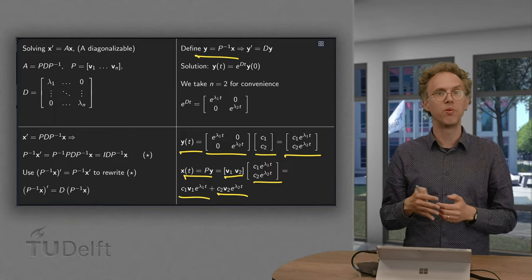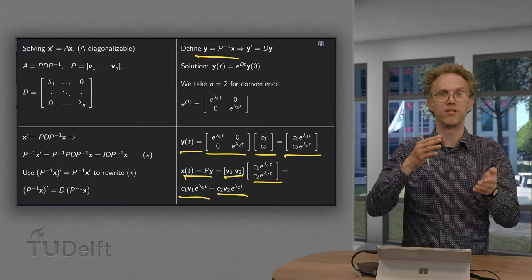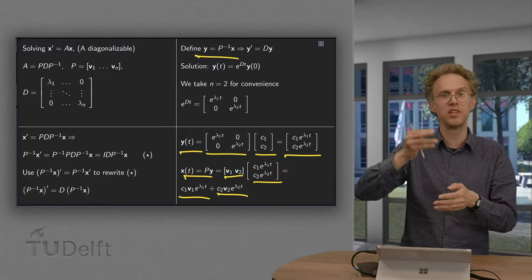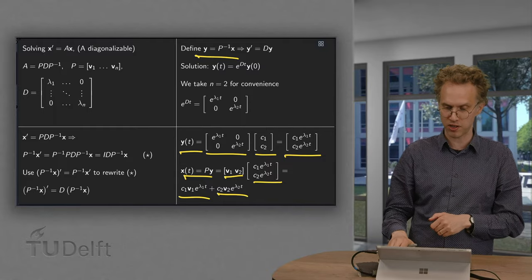So if we would have more, then we would have not only c1 v1 e to the power lambda 1t and c2 v2 e to the power lambda 2t, but also c3 v3 e to the power lambda 3t and so on and so forth.